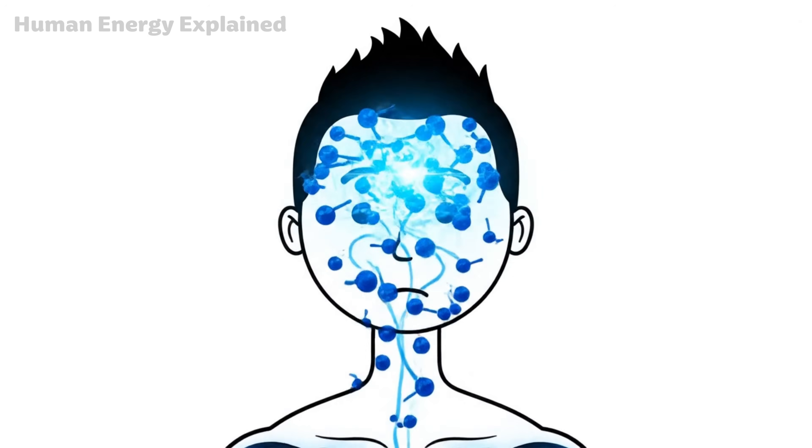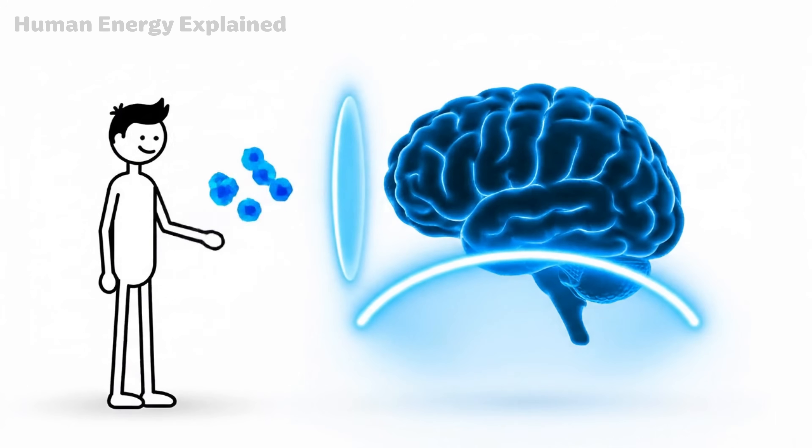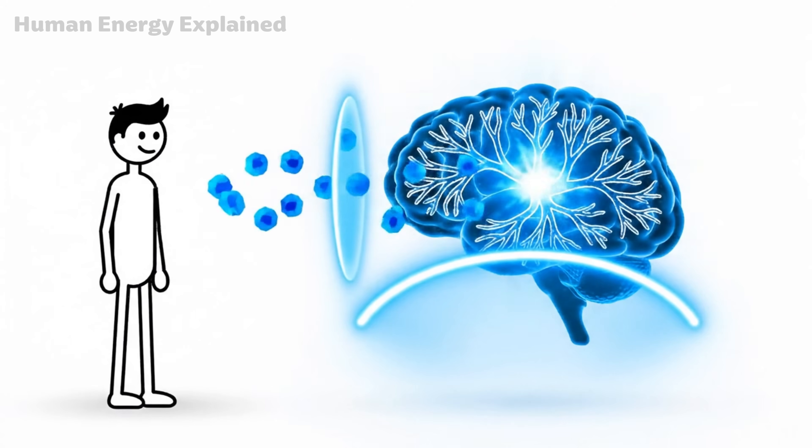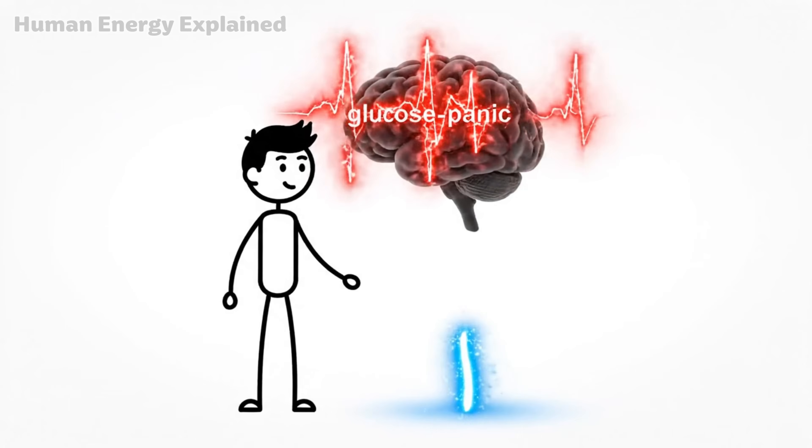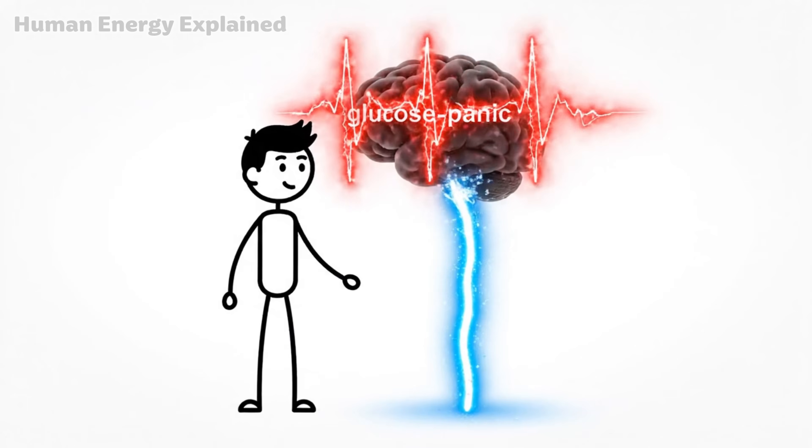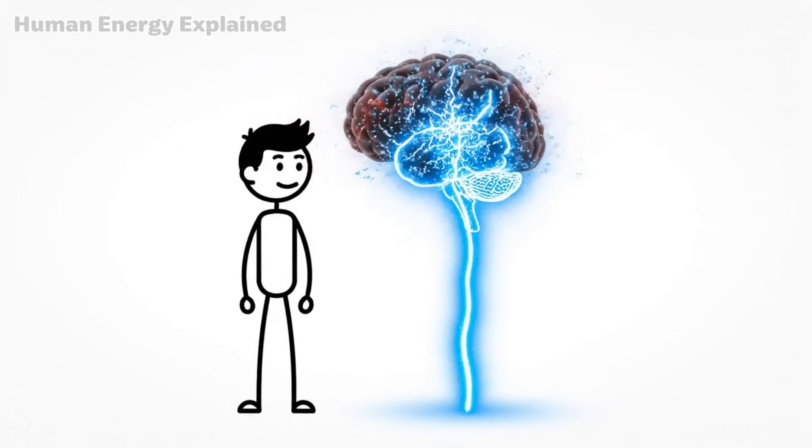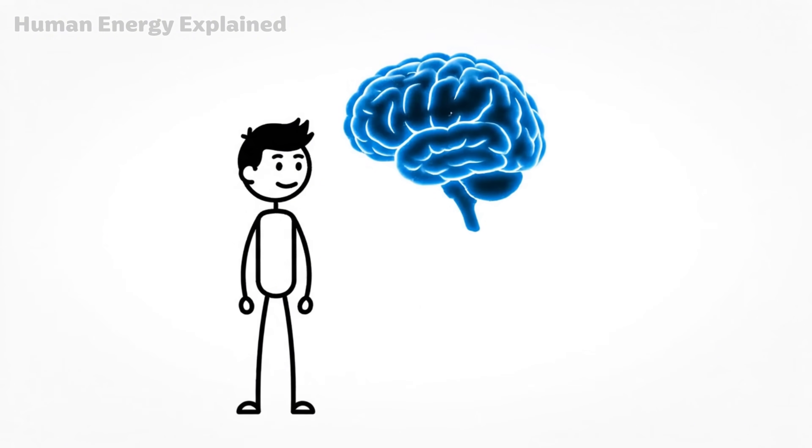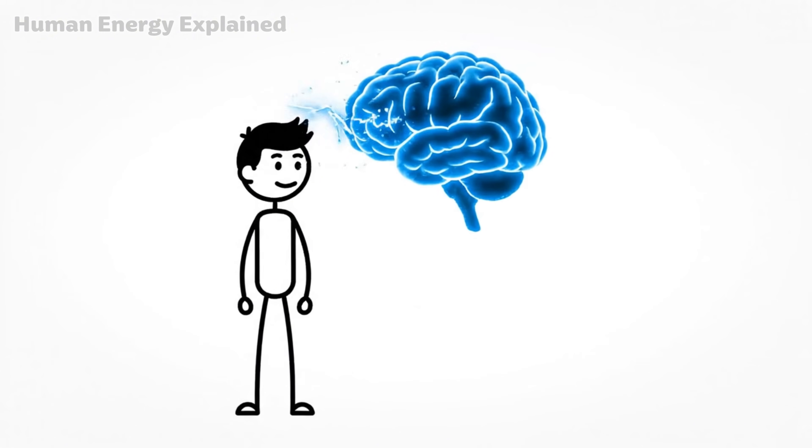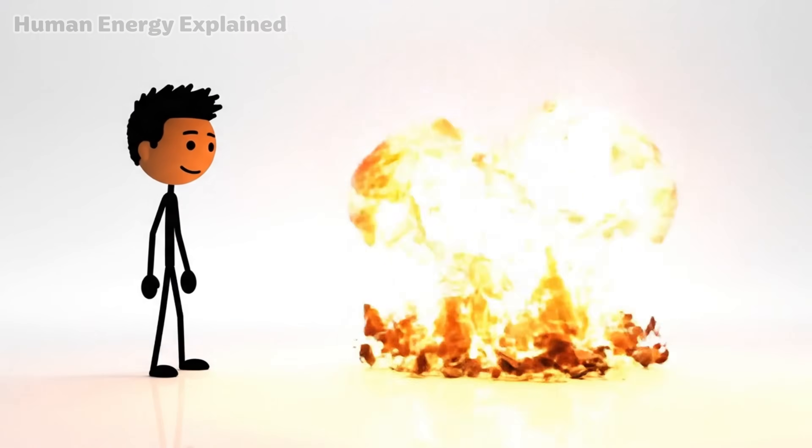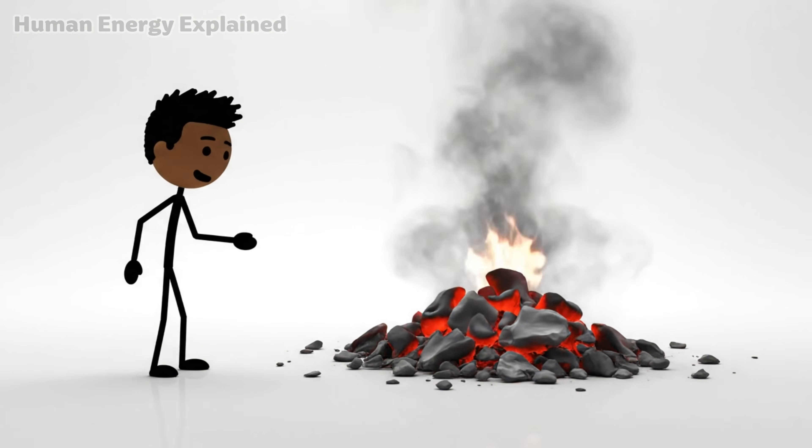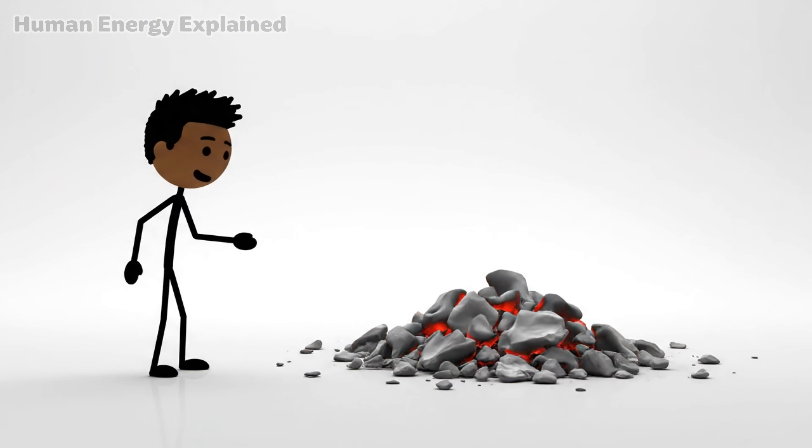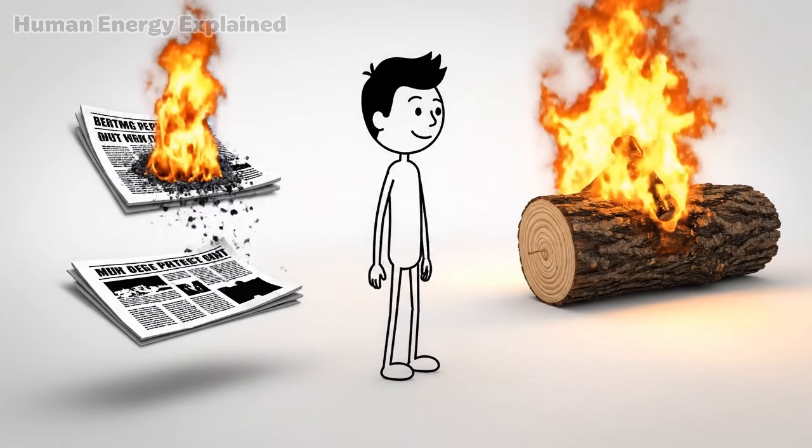And here's where things get fascinating. Ketones don't just fuel your muscles, they cross the blood-brain barrier and feed your neurons directly. Your brain, which was screaming for glucose just hours ago, suddenly receives a different kind of fuel. Cleaner, steadier, more sustainable. Think of glucose like burning newspaper. Quick flame, bright for a moment, then gone. You need constant feeding to keep the fire going.